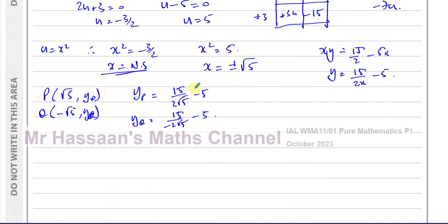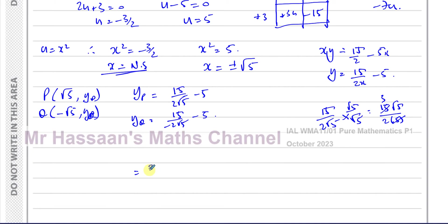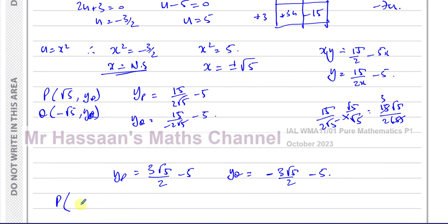To simplify, I'll rationalize 15 over 2 root 5 by multiplying numerator and denominator by root 5, giving 15 root 5 over 2 times 5. Since 15 divided by 10 simplifies to 3 over 2, this becomes 3 root 5 over 2. So the y-coordinate of P is 3 root 5 over 2 minus 5, and the y-coordinate of Q is minus 3 root 5 over 2 minus 5. The coordinates of P are (root 5, 3 root 5 over 2 minus 5) and Q are (minus root 5, minus 3 root 5 over 2 minus 5).